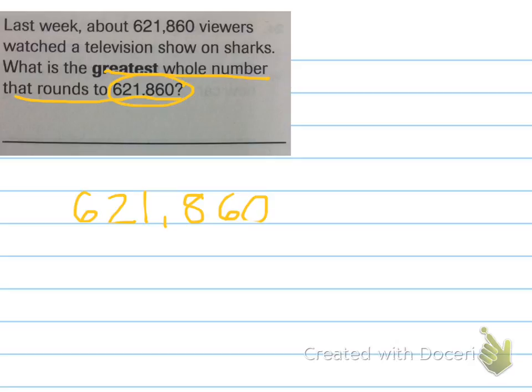So, if 4 is the greatest number that still rounds down, ooh, let's try ending it in a 4 then. 621,864. Let's see if that rounds down to 621,860.